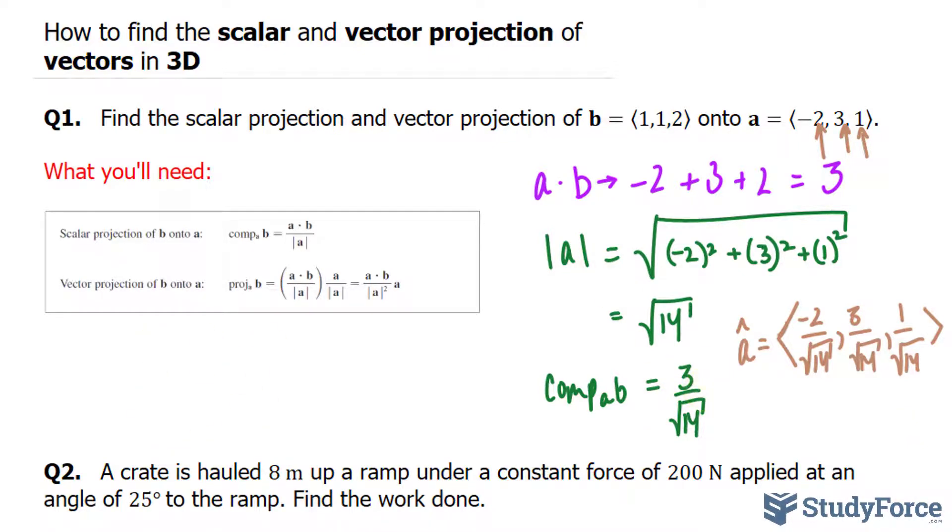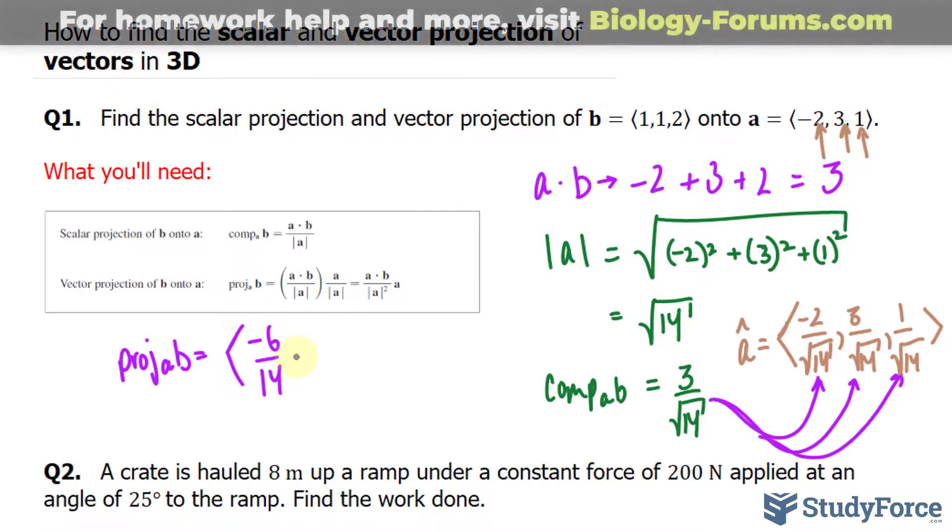So I'll have this number being multiplied to that, this number multiplied to that, and then to that. And that will give us a vector, which we'll call the projection of B onto A, is equal to 3 times negative 2, that's negative 6, over the square root of 14 times the square root of 14, that's positive 14. So negative 6 over 14,